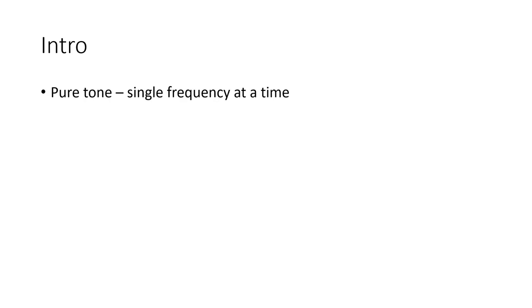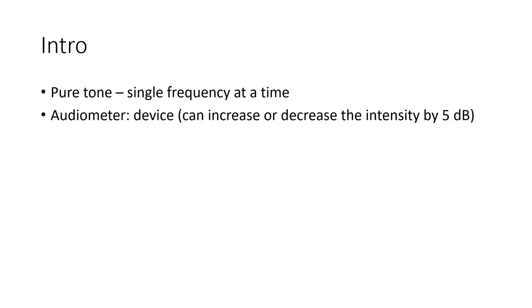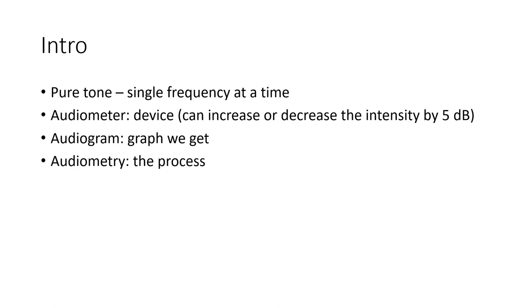Let's get started with the introduction. Why is it called pure tone audiometry? It's called pure tone because it uses the sound of a single frequency at a time. An audiometer is a device that produces sound of a particular frequency, and it can increase or decrease the intensity — that is, the loudness — of that frequency by 5 decibels, to interpret it in an audiogram. That's the graph we get after plotting frequency versus intensity. The frequency is on the x-axis, whereas intensity is on the y-axis. This overall process is called audiometry.